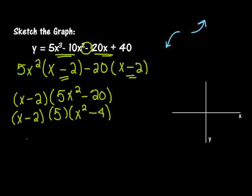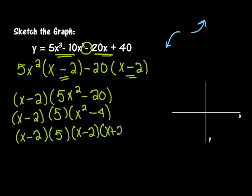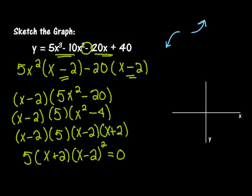Well, x squared minus 4 also factors. So I'm going to have x minus 2 times 5 times x minus 2 times x plus 2. Now when I simplify this, it actually means 5 times x plus 2 times x minus 2 squared. And when we equal that to 0, this tells me where my x-intercepts are. My x-intercepts are going to be at negative 2 and 2. So let's graph that. I'm going to call this negative 2 and I'm going to call this guy 0, 2.